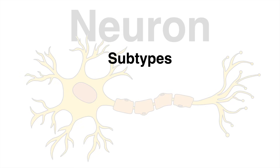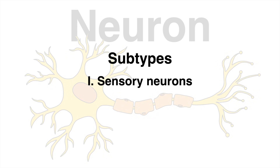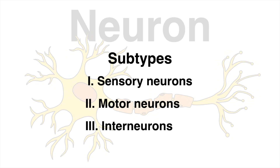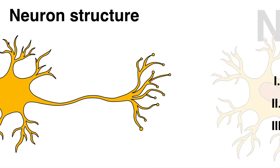There are different subtypes of neurons: namely sensory neurons, transmitting information from the external and internal environment to the central nervous system; motor neurons, conveying commands to muscles and organs; and finally interneurons that transmit information between separate neurons.